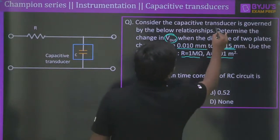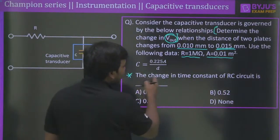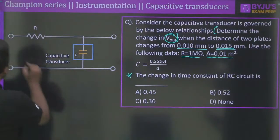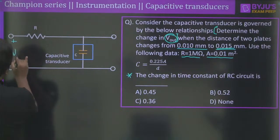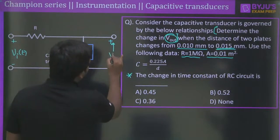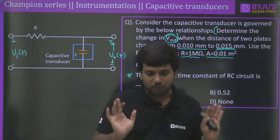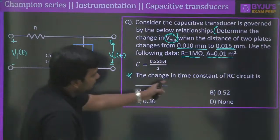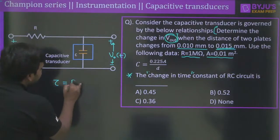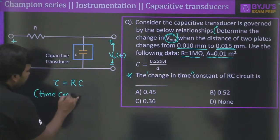This question involves an RC circuit with a sinusoidal input V_in(t), which produces a sinusoidal steady-state output V_out(t). The question asks for the change in time constant. Since τ = RC and only the capacitance is changing (resistance stays at 1 MΩ), we calculate τ₁ = RC₁ and τ₂ = RC₂, then find Δτ = τ₂ − τ₁.